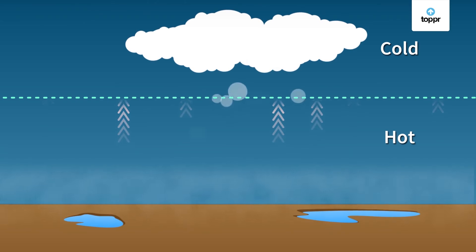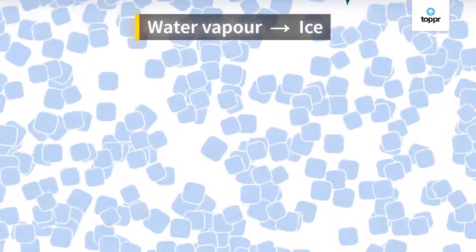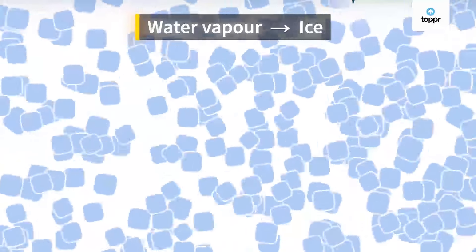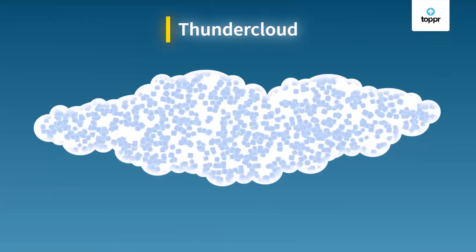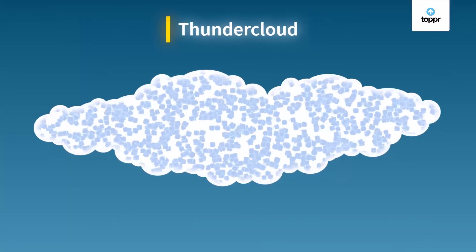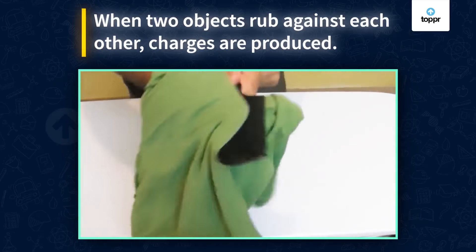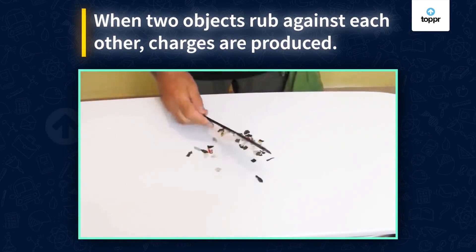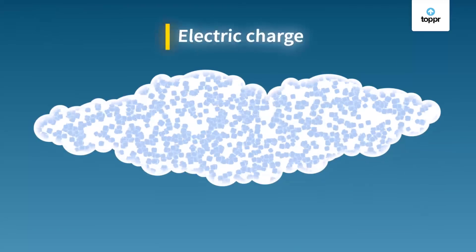If the temperature at the top of the clouds falls below the freezing point, the water vapor turns into ice. The cloud becomes a thunder cloud. Lots of small bits of ice bump into each other as they move around. We have already studied that whenever two objects rub against each other, they get charged. So even here, clouds develop an electric charge.